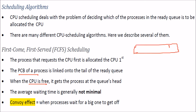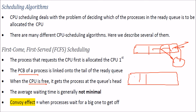The first scheduling algorithm is First-Come First-Served (FCFS). The process that arrives first is allocated the CPU first; its PCB is linked to the tail of the ready queue. Whenever the CPU is free, it picks the process at the head of the queue sequentially. However, the average waiting time is not minimal due to the convoy effect — small processes wait a long time behind one large process.